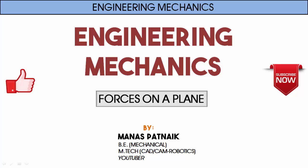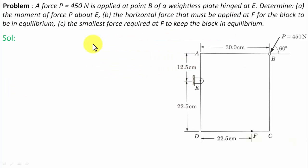Hi there guys, hope you're doing well. This is your friend and tutor Manus. A force P equal to 450 Newtons is applied at point B of a weightless plate hinged at E. Determine the moment of force P about E, the horizontal force that must be applied at F for the block to be in equilibrium, and the smallest force required at F to keep the block in equilibrium.